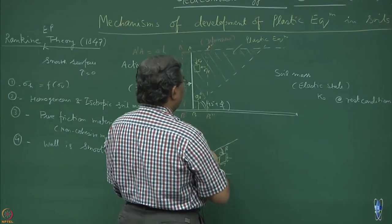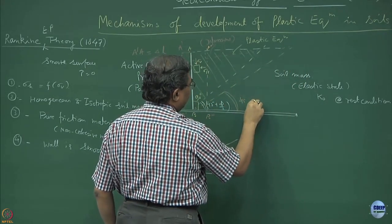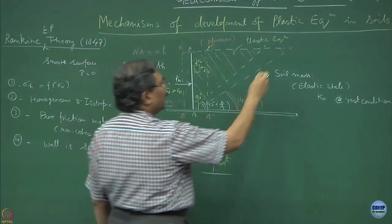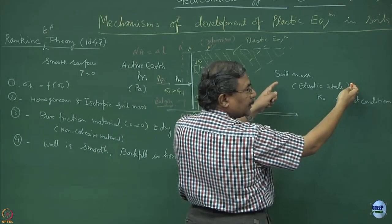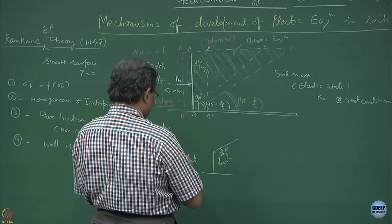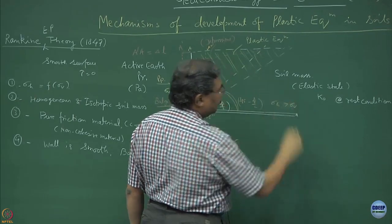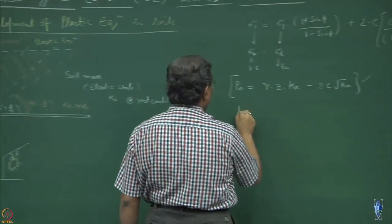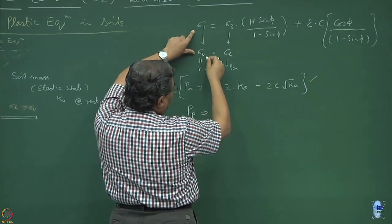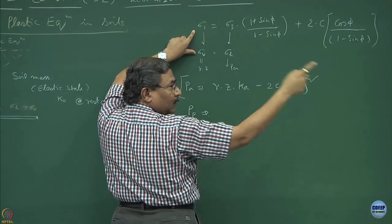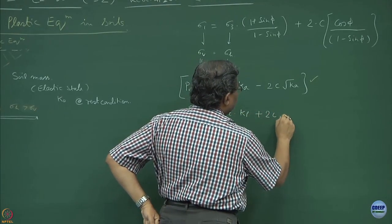In the passive case, sigma h is greater than sigma v, and this angle is going to be 45 minus phi by 2 for the slip surface. This whole soil mass goes into the state of plastic equilibrium; the rest of the body remains in the elastic K0 condition. Sigma 1 remains equal to the passive earth pressure, and sigma 3 becomes sigma v. This becomes sigma z times Kp plus 2c root of Kp.